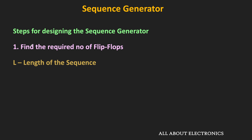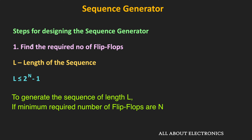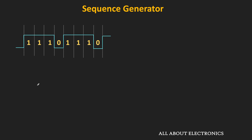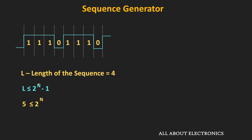Let's say the length of the sequence is equal to L. If we use n number of flip-flops, then the maximum length of the binary sequence we can generate is equal to 2 to the power n minus 1. To generate a sequence of length L, the minimum required number of flip-flops n must satisfy this condition. So let's take an example — we want to generate the pattern 1110. The length of the sequence is equal to 4. As per this equation, the minimum required number of flip-flops is equal to 3, because if we put n equal to 2, the right-hand side gives 4, so n should be equal to 3.